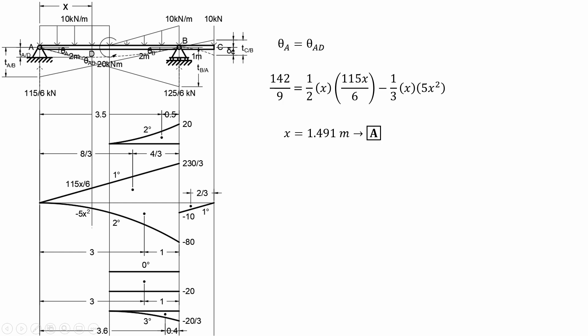The value of X is less than 2, so it means our assumption for the location of the maximum deflection is correct. Solving for TAD, which is also equal to the maximum deflection.